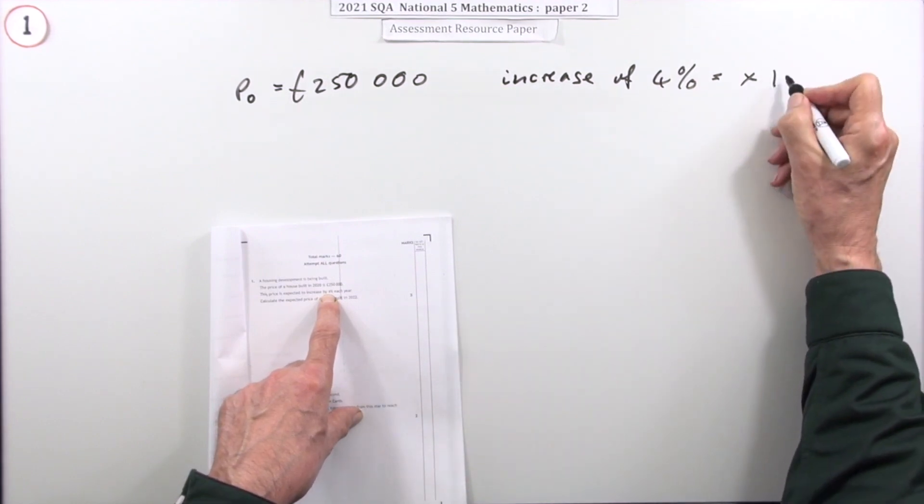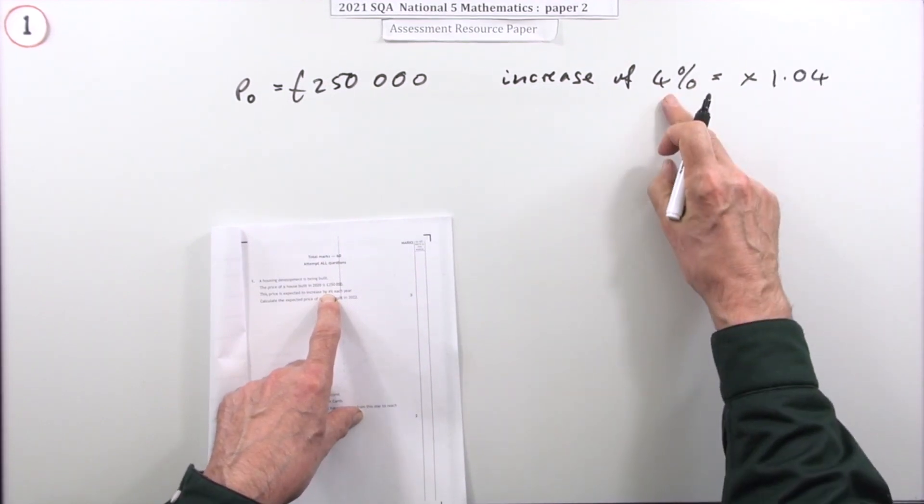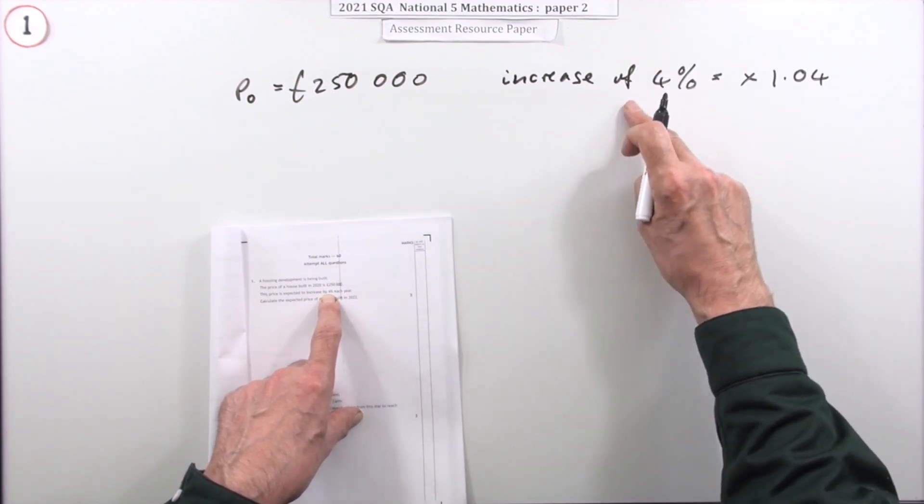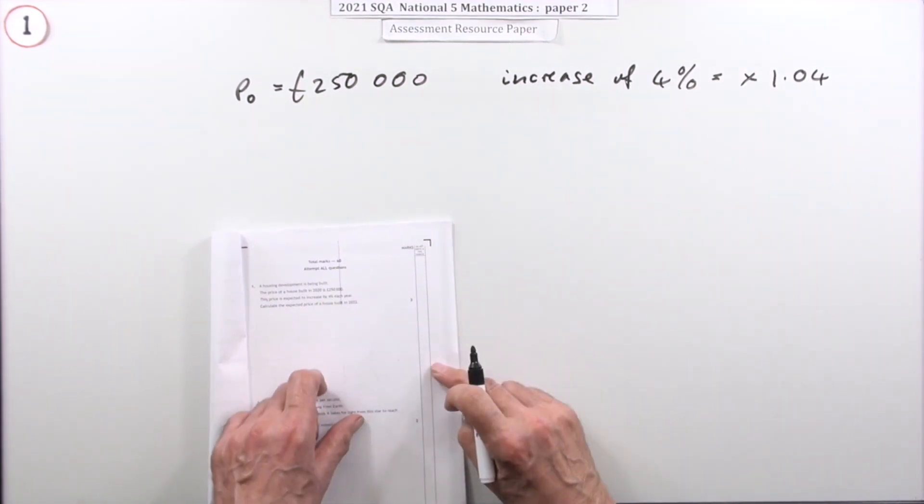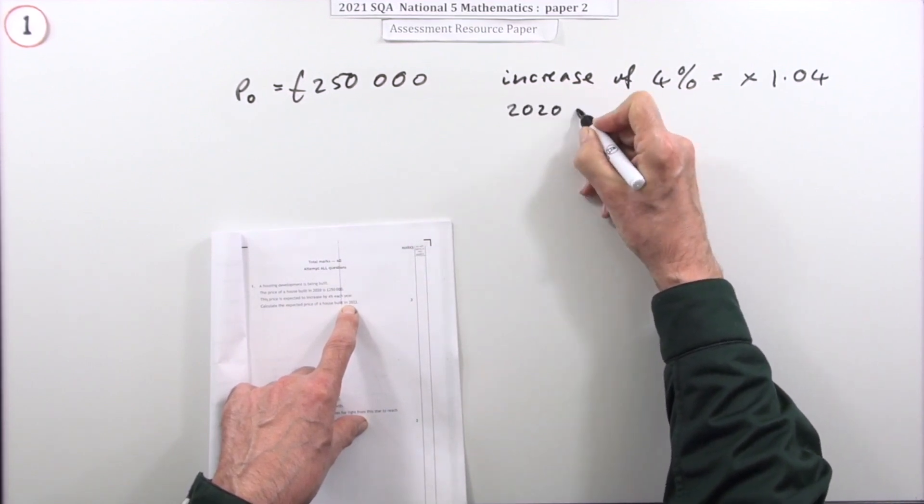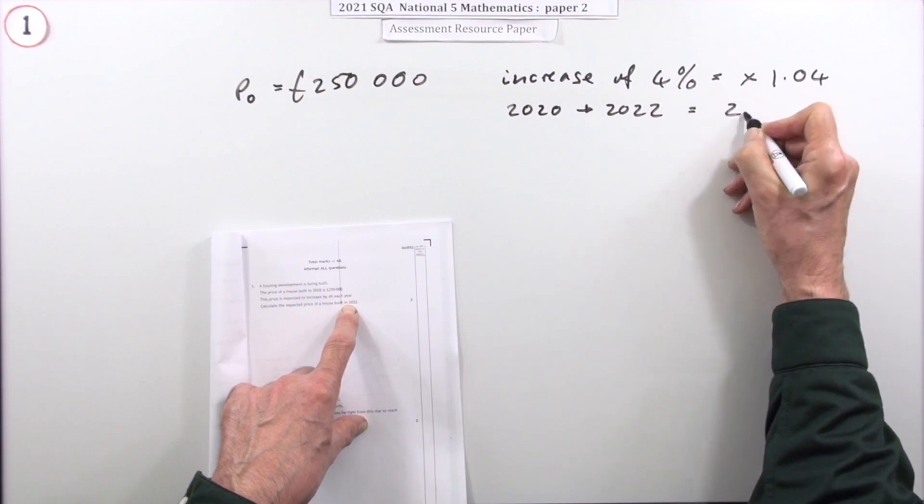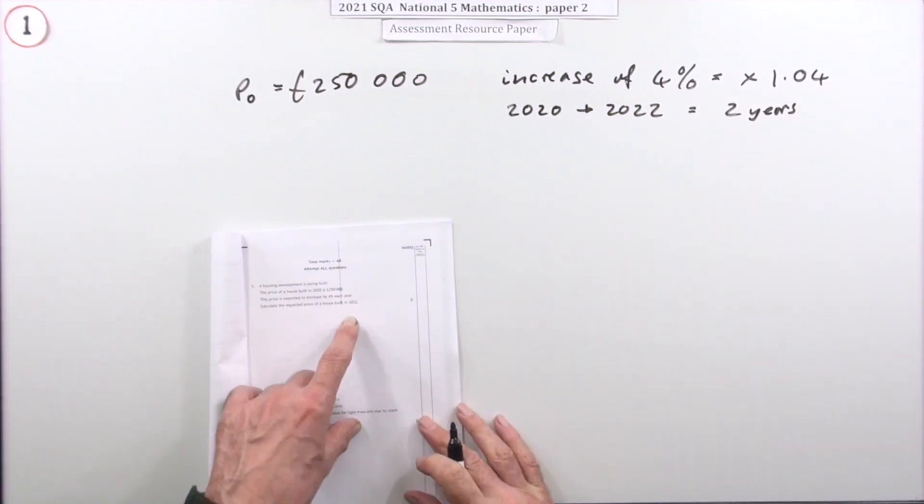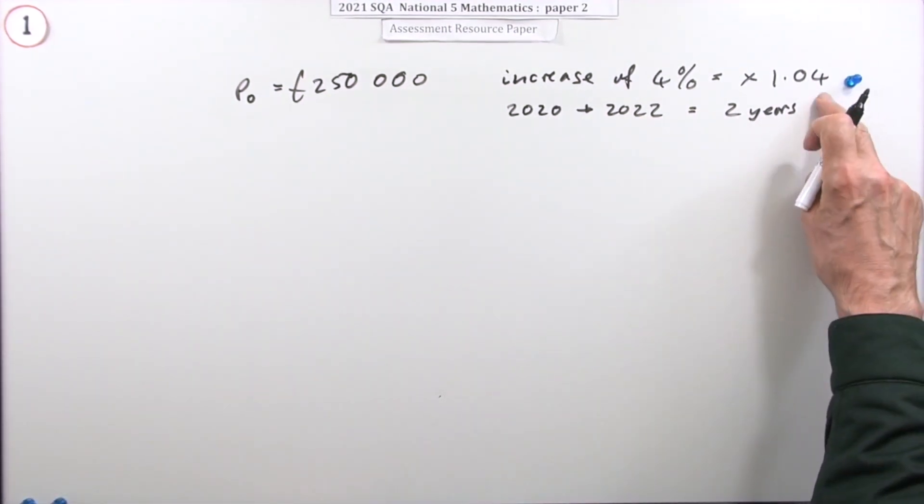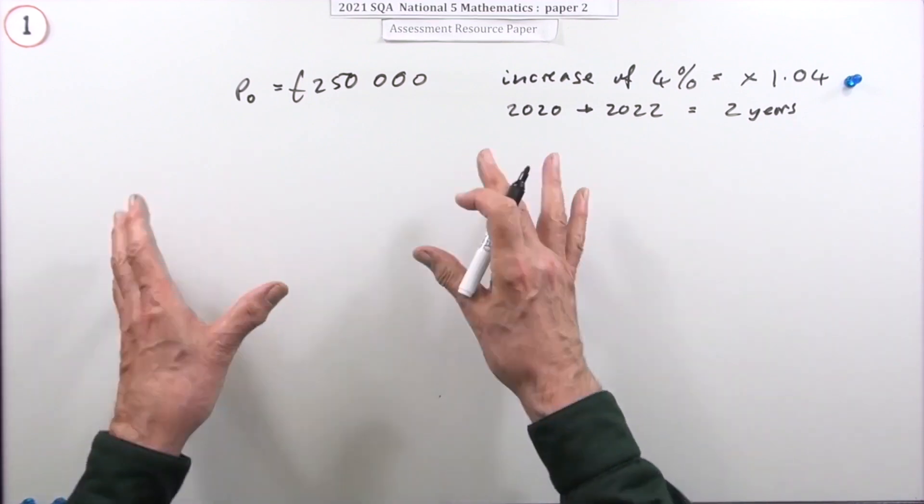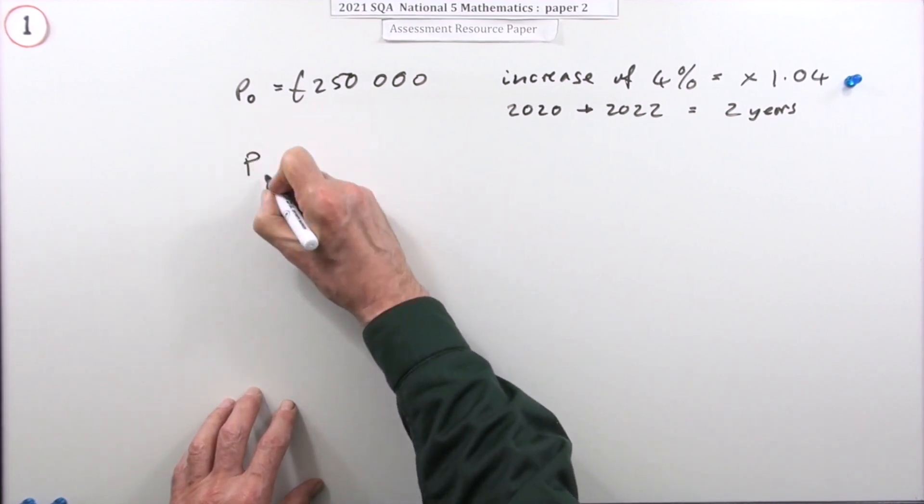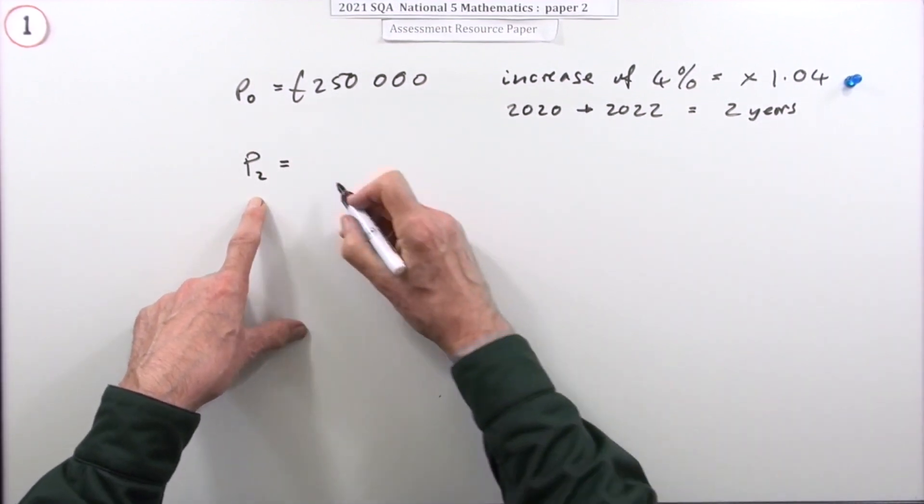An increase of 4% means you're going to multiply by a factor of 1.04. Four percent is four hundredths, that's 0.04, and you're going to add it on to the original hundred, so it's 104% and that becomes 1.04 as a decimal. It says what's it going to be in 2022? I'll take a note of that. 2020 to 2022 is two years, so you're going to apply this twice. You get one mark for recognizing you need to use a factor of 1.04.